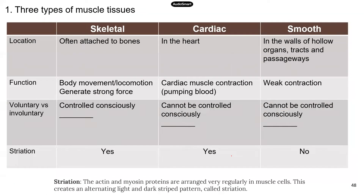Here's a comparison between the three types of muscles. Skeletal muscles are involved in generating body movement. They are attached to bones, so when skeletal muscles contract, they pull the bones and that generates movement. Skeletal muscles are very strong — they generate a strong force.